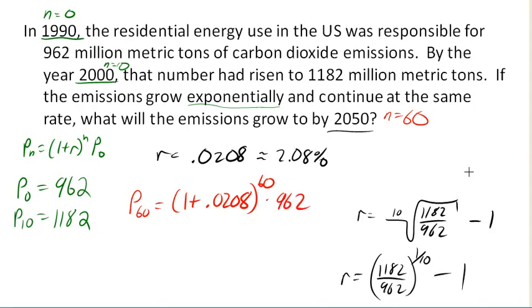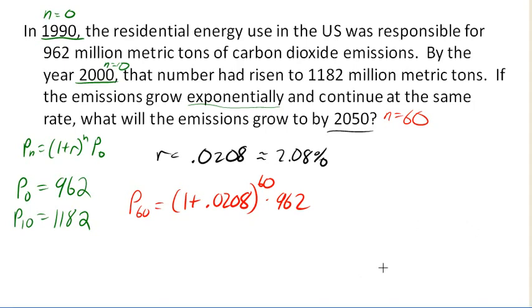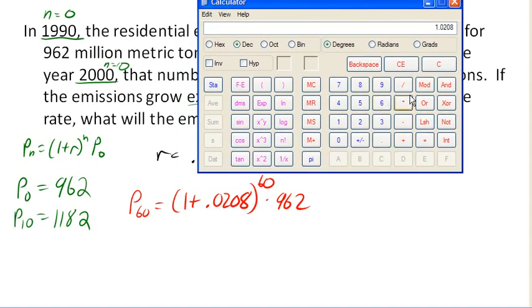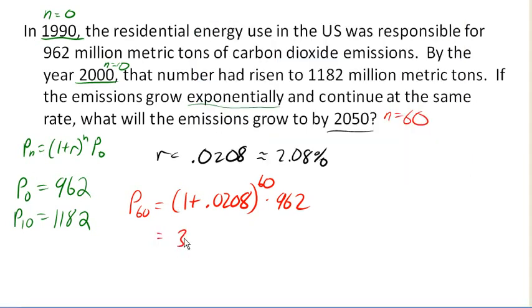Okay, and so now we can go ahead and evaluate that. So I'm going to pull out my calculator again. So I've got 1 plus 0.0208. And now I need to make sure my calculator adds those before I raise this to a power. So I'm going to go ahead and hit equals to add them. Now I can raise this to the 60th power and multiply by 962. Now this answer would be a little bit different if I had not rounded off this r value, but for our purposes, this is going to be close enough. So we got 3308.4.